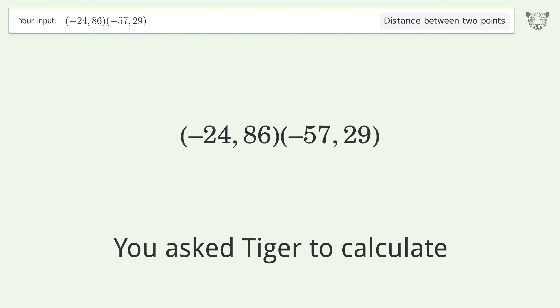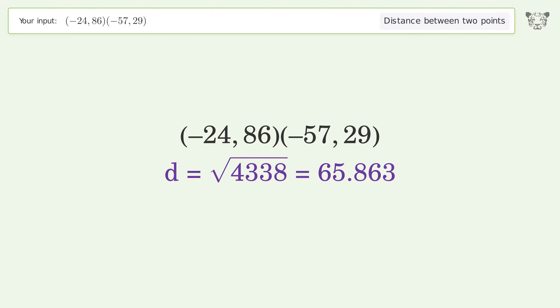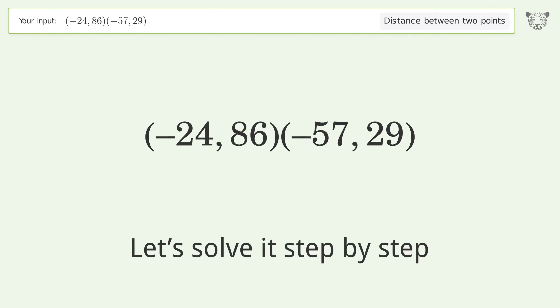You asked Tiger to calculate this. This deals with the distance between two points. The distance between the two points is the square root of 4338 or 65.863. Let's solve it step by step.